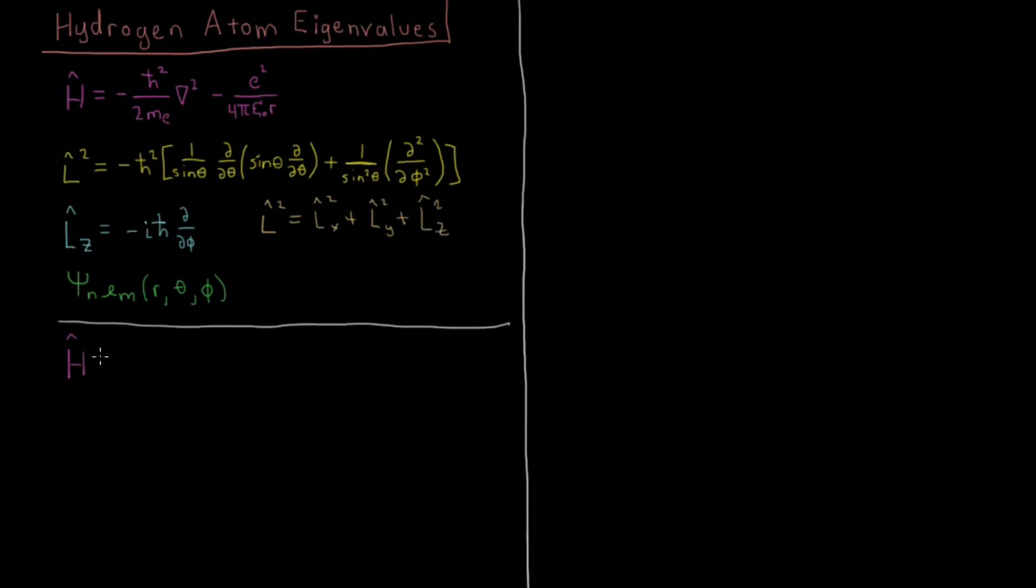So if we have H acting on psi NLM of spherical polar coordinates R, theta, and phi, what you'll get back out there is just the Schrodinger equation, the rest of it, EN psi NLM. So the energy only depends on the quantum number N, as we've seen.